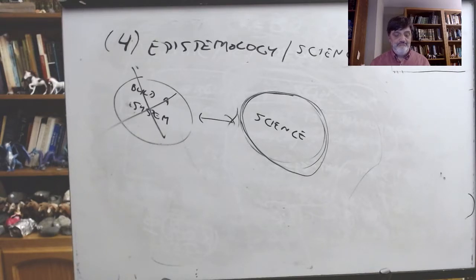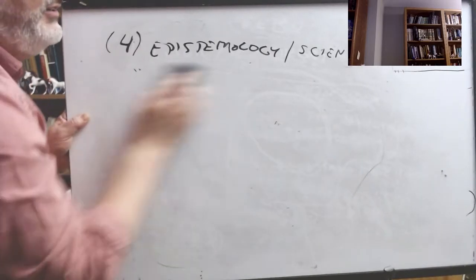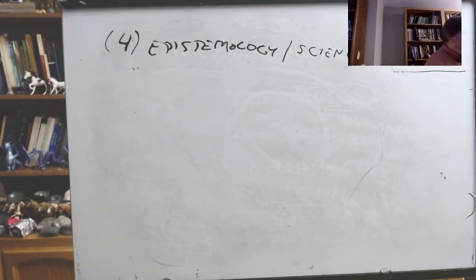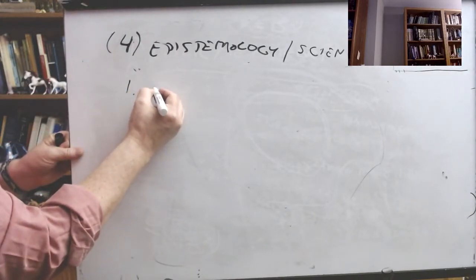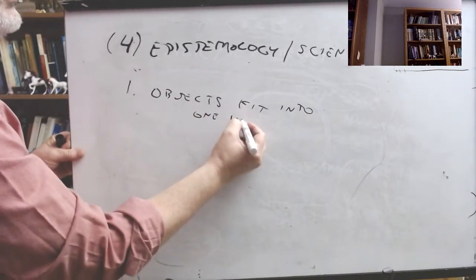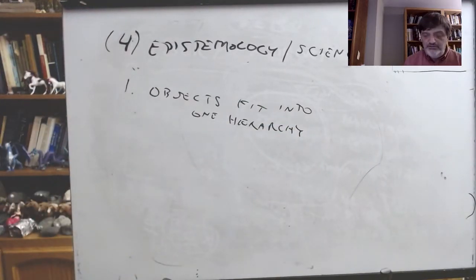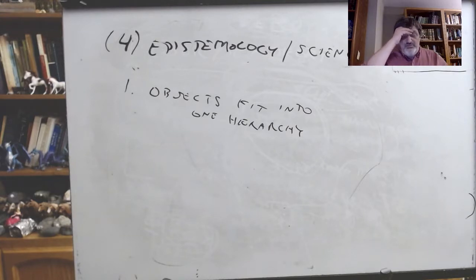Now, going back to the first project — that objects all fit into one hierarchy. If the objects all fit into this system of types, then we must be able to tell that the names of the objects are already working the way Russell says names of classes and relations have to work.